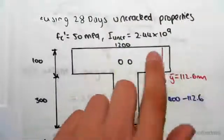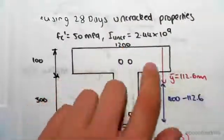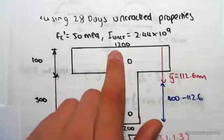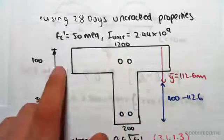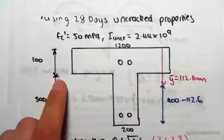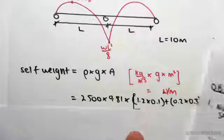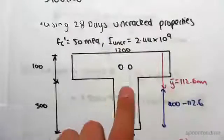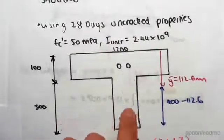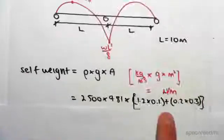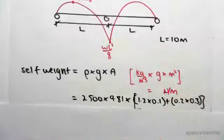The area of our beam is going to be this area plus this area. This area is 1200 by 100 mm, which in meters is 1.2 by 0.1, plus the area of this rectangle here, which is going to be 0.3 by 0.2 meters.